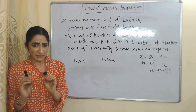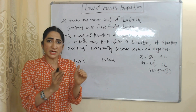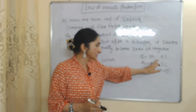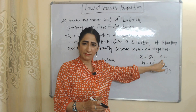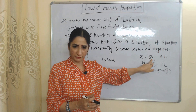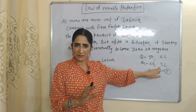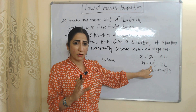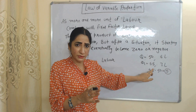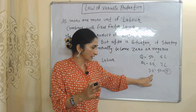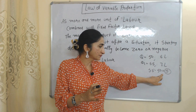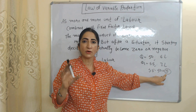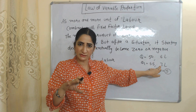Marginal product of labor means the change in output by hiring one more unit of labor. For example, if 6 laborers give output equal to 50 and 7 laborers give output equal to 55, the change in output is 55 minus 50, which equals 5. This 5 will be called the marginal product of the 7th laborer.